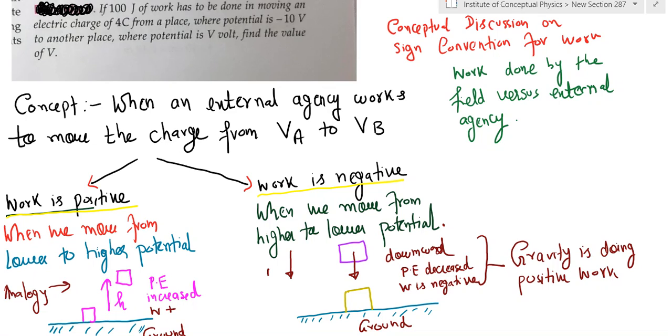But there are two ways to look at work. One is work done by a human being who picks up a mass, raises the height of the mass, and we say work has been done by the human being against the force of gravity. Then the same work can be seen from the point of view of the earth's gravitation.